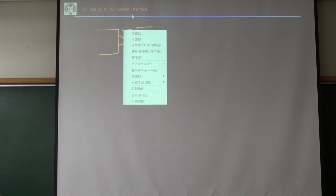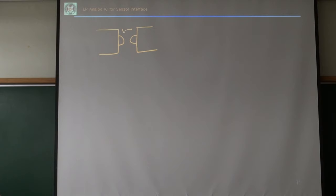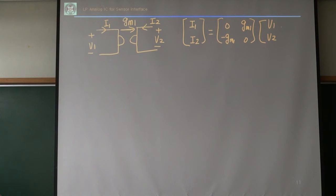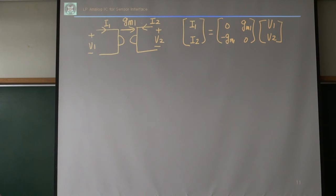The gyrator has some polarity — gm. If I put the current polarity this way, then i1 and i2 are given by the matrix: i1 = gm1·v2, i2 = -gm1·v1. If I reverse the i2 direction, it becomes positive.